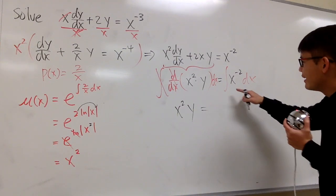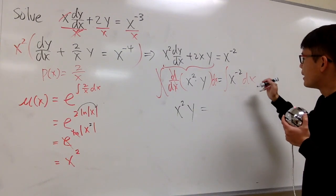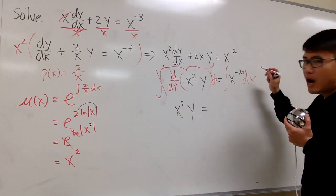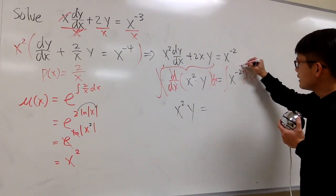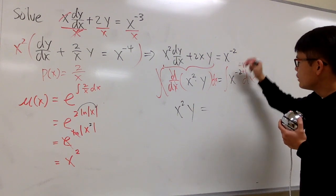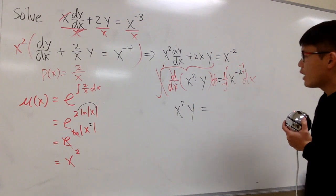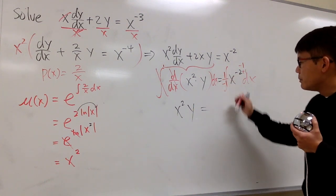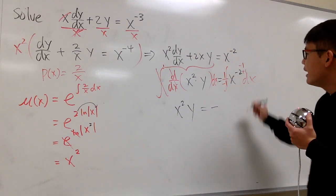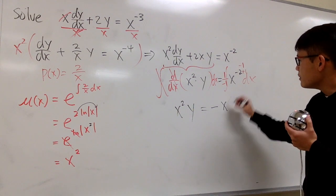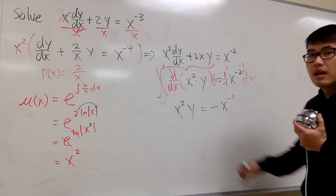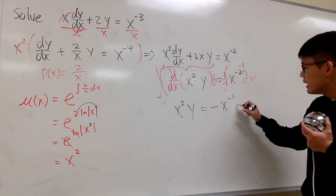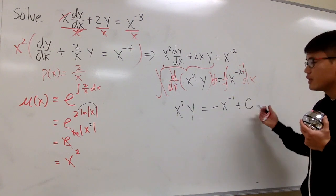All right. This is so nice for us to integrate. The integral of x to the negative 2 power. We are going to add 1 to the power. Negative 2 plus 1 is negative 1. And we divide it by this new exponent, which is 1 over negative 1. This is going to give me negative. And then we have x to the negative 1 power.